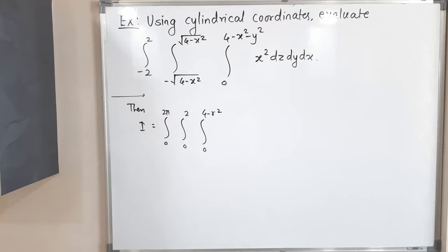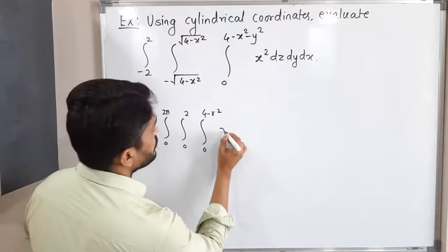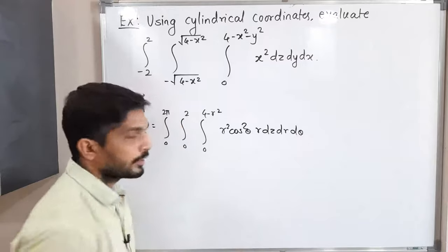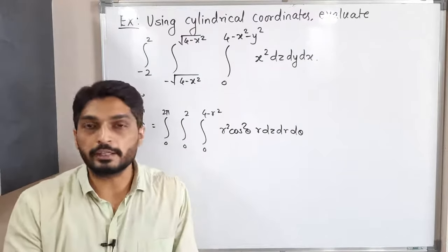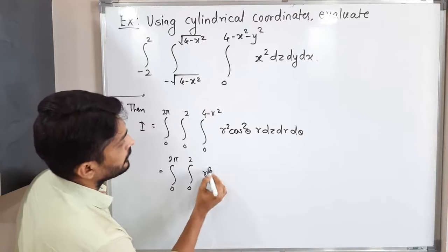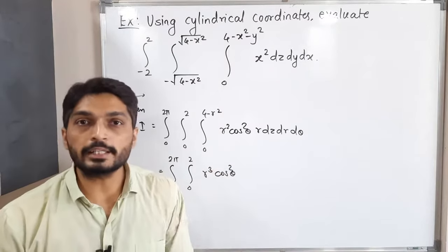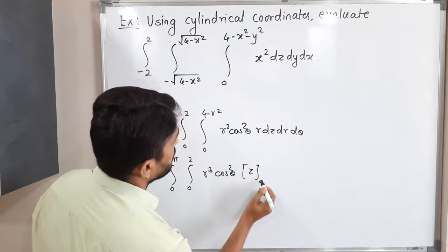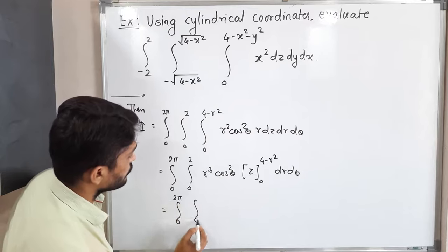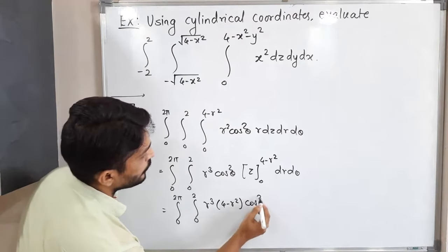Now let us solve the integration. The inner integral is with respect to z, middle with respect to r, outer with respect to θ. We write x = r·cosθ, so x² = r²cos²θ, and replace dx·dy·dz with r·dz·dr·dθ. Since r³cos²θ is constant with respect to z, the inner integral becomes ∫₀^{4-r²} dz = [z]₀^{4-r²} = 4 - r².